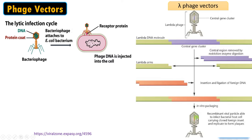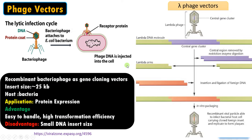This non-essential region is replaced with our gene of interest, packaged in vitro, and allowed to infect the bacteria so that the phage genome carries our desired DNA fragment — so the phage acts as a vector. Recombinant bacteriophages are used as gene cloning vectors with an insert size slightly more than plasmid, up to 25 kb. The host is bacteria and the application is protein expression. The advantage is it is easy to handle and has high transformation efficiency due to the natural infection process.